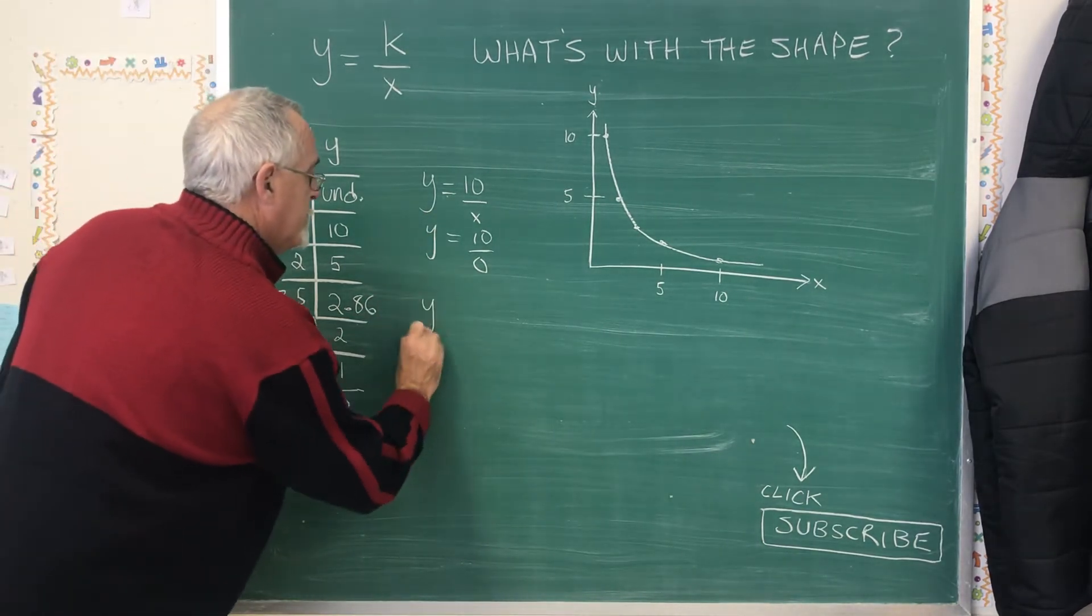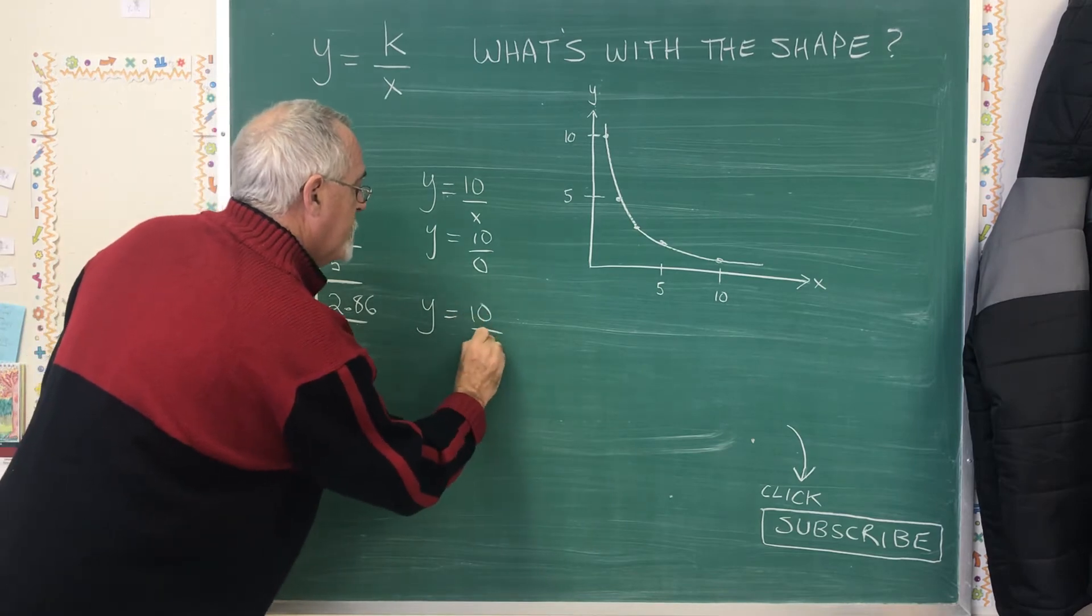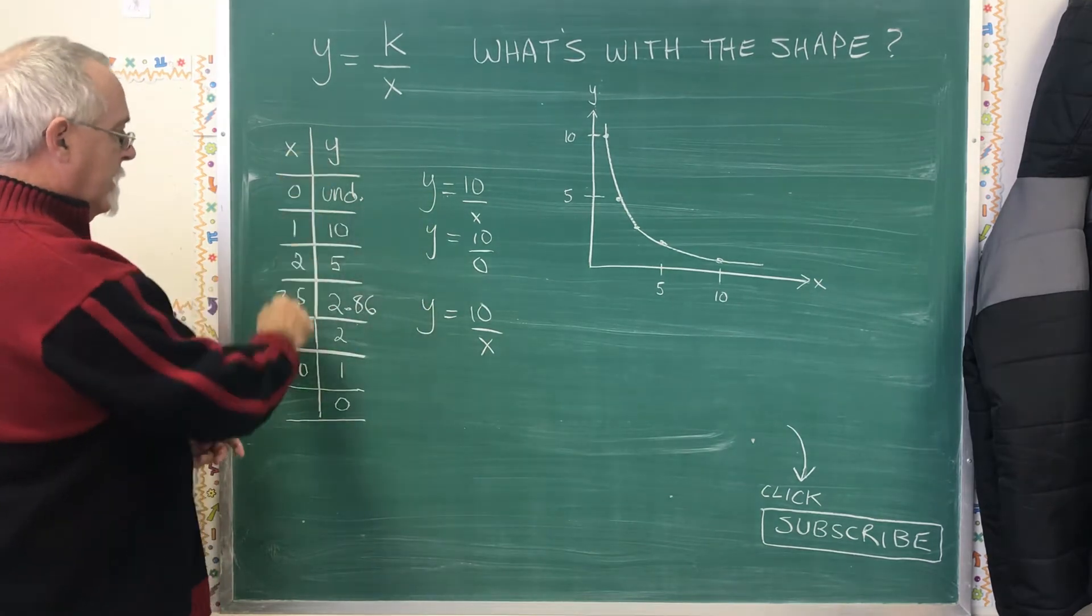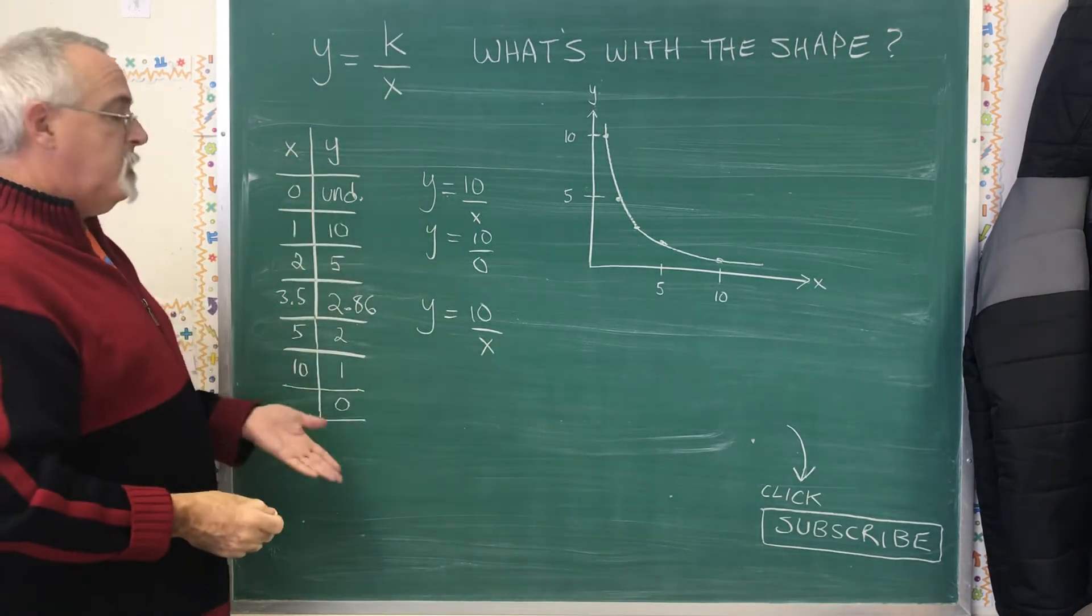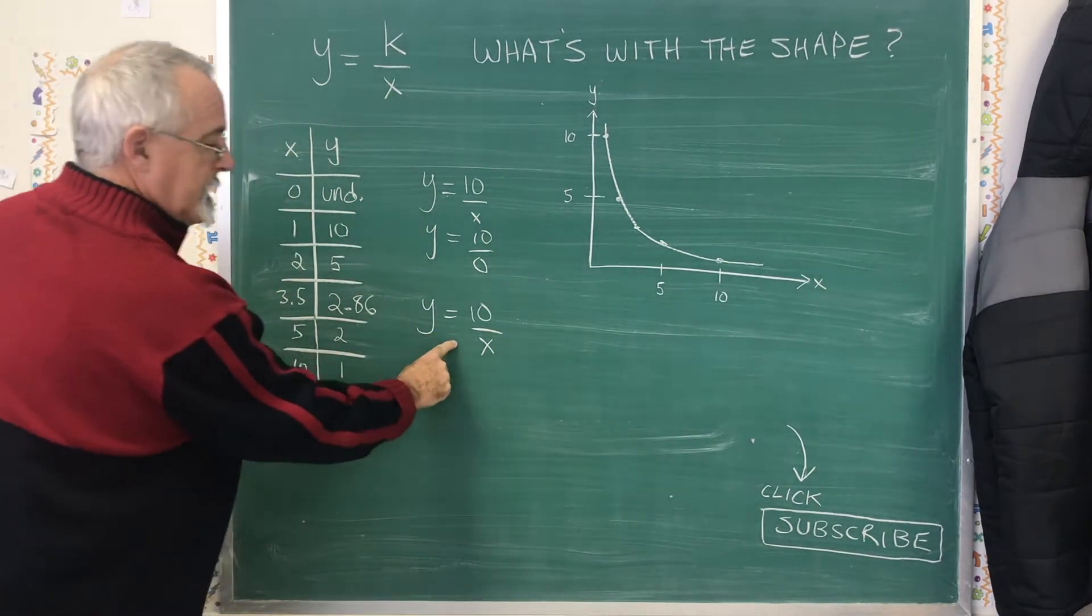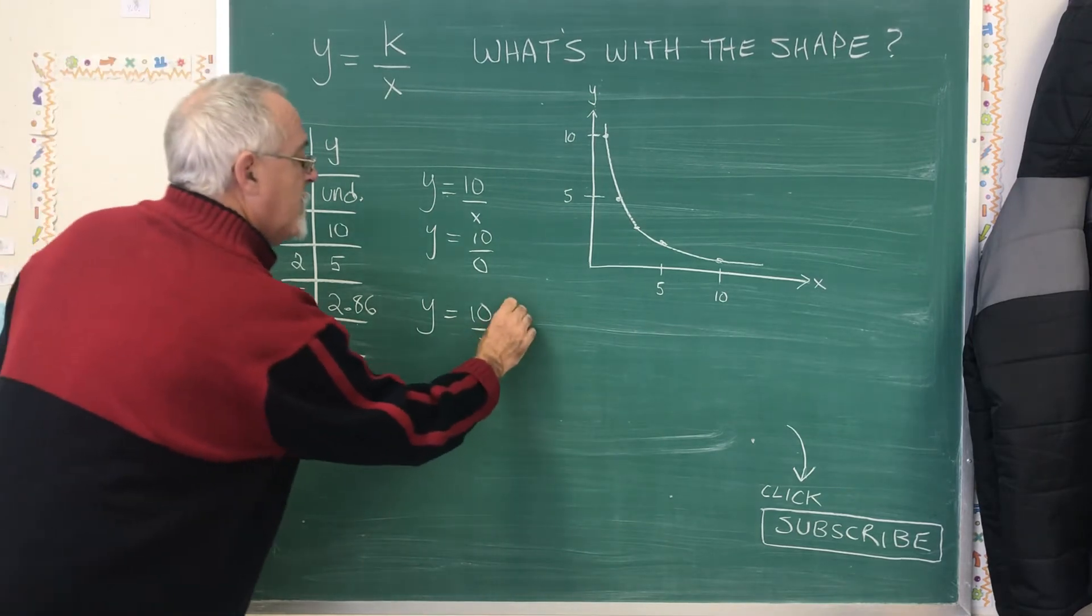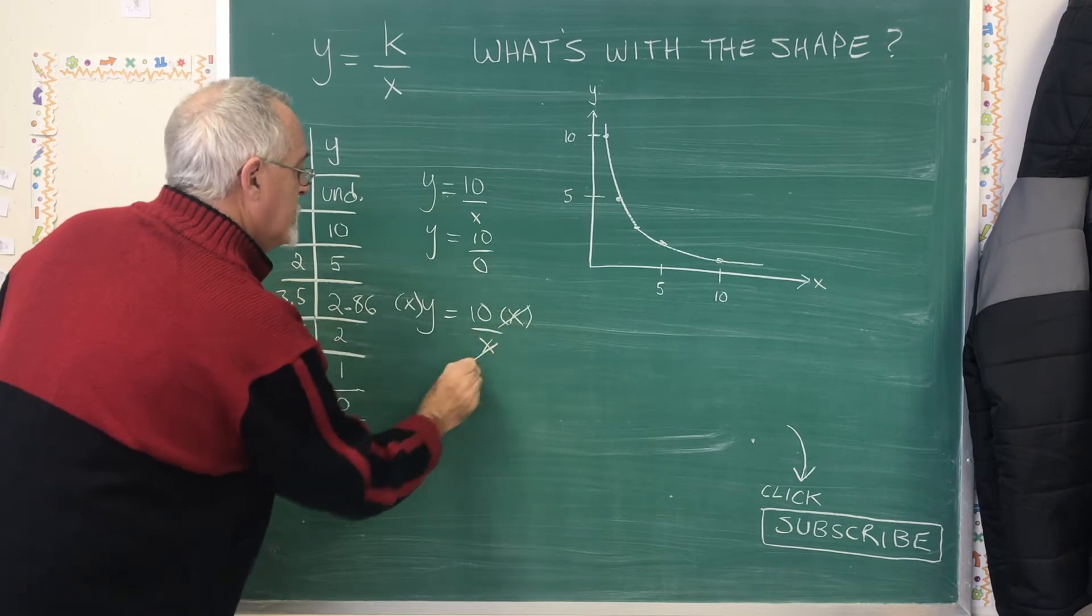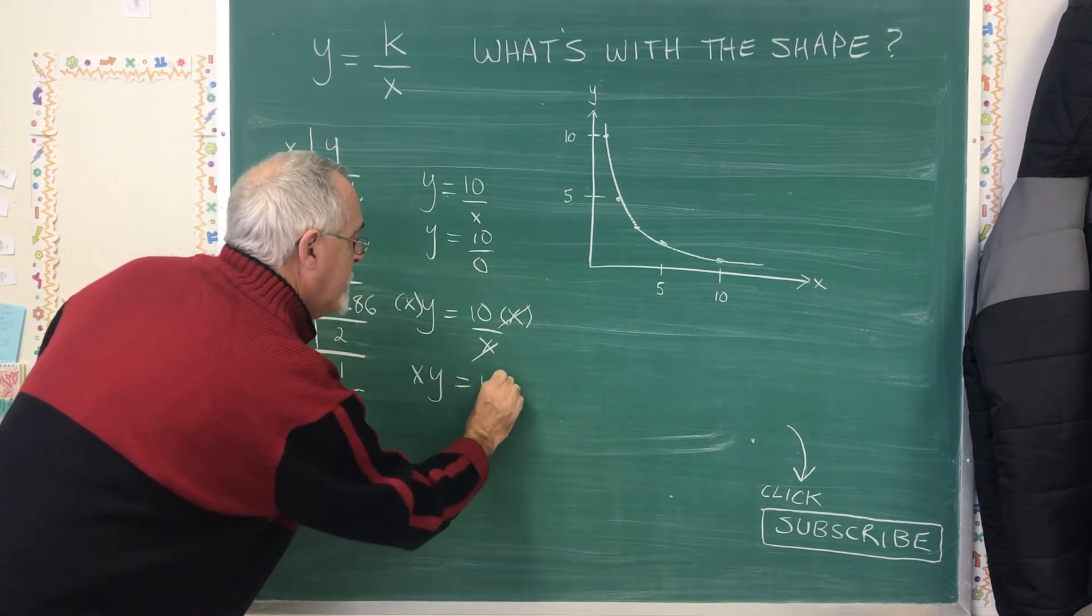To show you what happens with that, I'll take my equation, and I'm going to isolate the x. It was useful to have the y isolated for all of these points because it was an x value we were plugging in. To isolate the x in this equation, I'm going to start by multiplying both sides by x. These cancel, so I have xy equals 10.